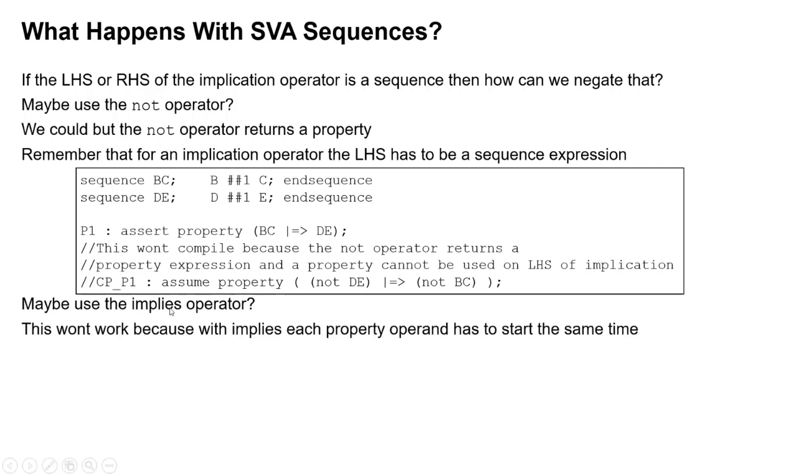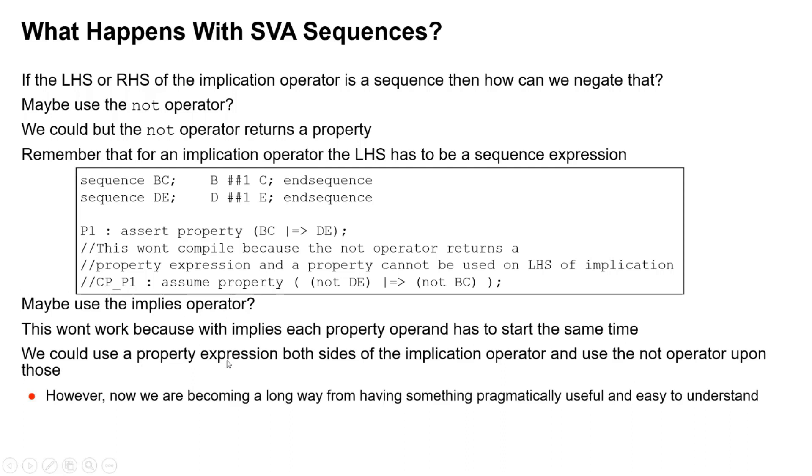So it's not doing the same thing. We could use a property expression both sides of the implication operator, i.e. instead of BC being a sequence, it's a property instead, likewise for DE. However, we're getting a long way now from something that's easy to understand and maintain and being of pragmatic use. We're just trying to use contrapositivity for the sake of it now. So how is it useful then?